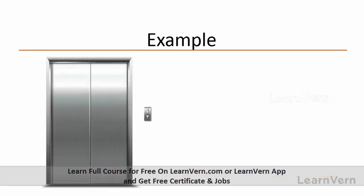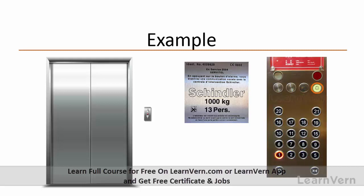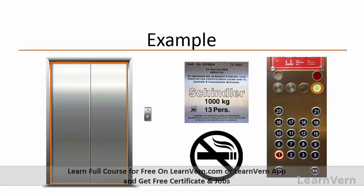Second example — the elevator. If we have to use any elevator or lift, there are some guidelines we should follow properly. Like, maximum capacity, if there is a problem in between how to use the alarm, or not jump in the elevator, not forcefully close or open, not smoke in the elevator — so these are all guidelines that we should follow. Same way, in test automation, there are guidelines that we should follow properly.